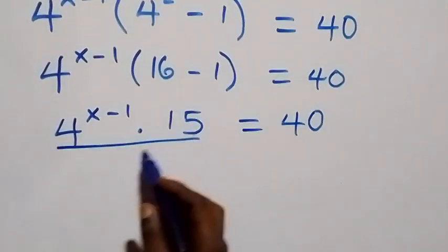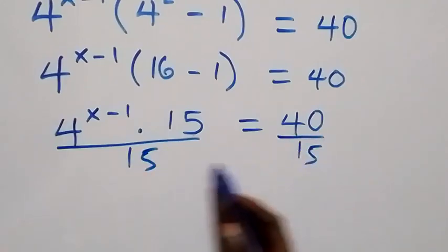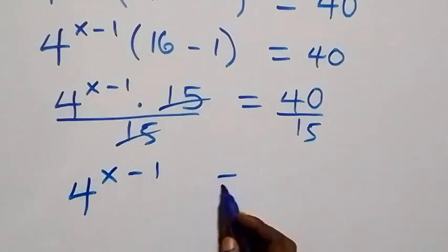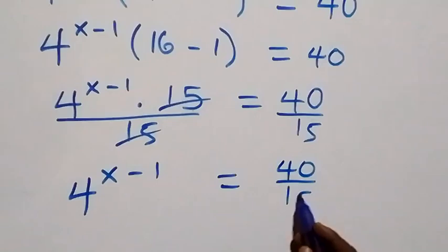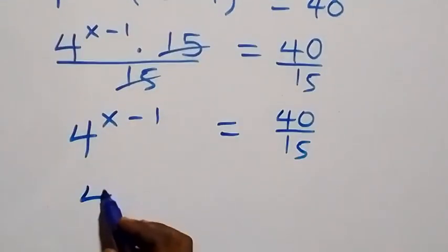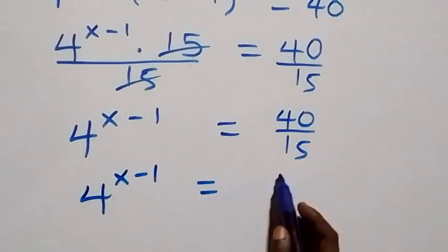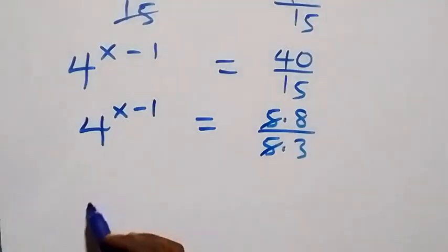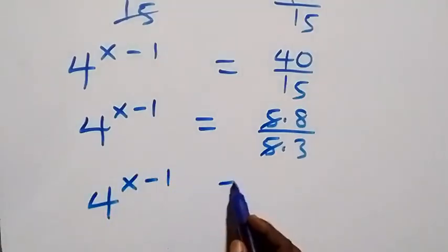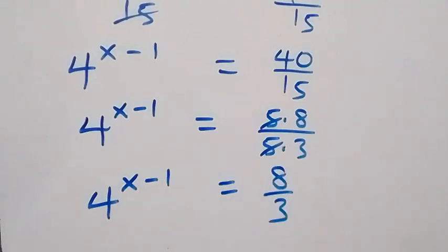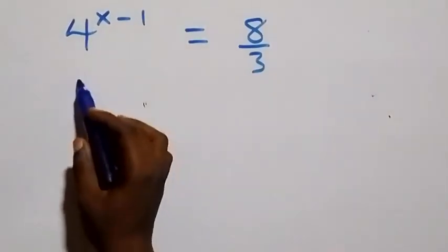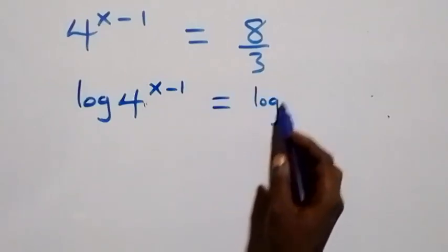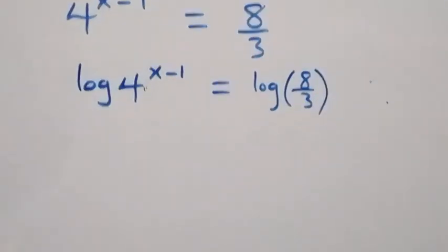Next step, we divide both sides by 15 — divide this side by 15, also divide this side by 15. 15 cancels, and we have 4 raised to power x minus 1, which equals 40 over 15. Simplifying, 40 over 15 equals 8 over 3. Then we take the log on both sides: log of 4 raised to power x minus 1 equals log of 8 over 3.